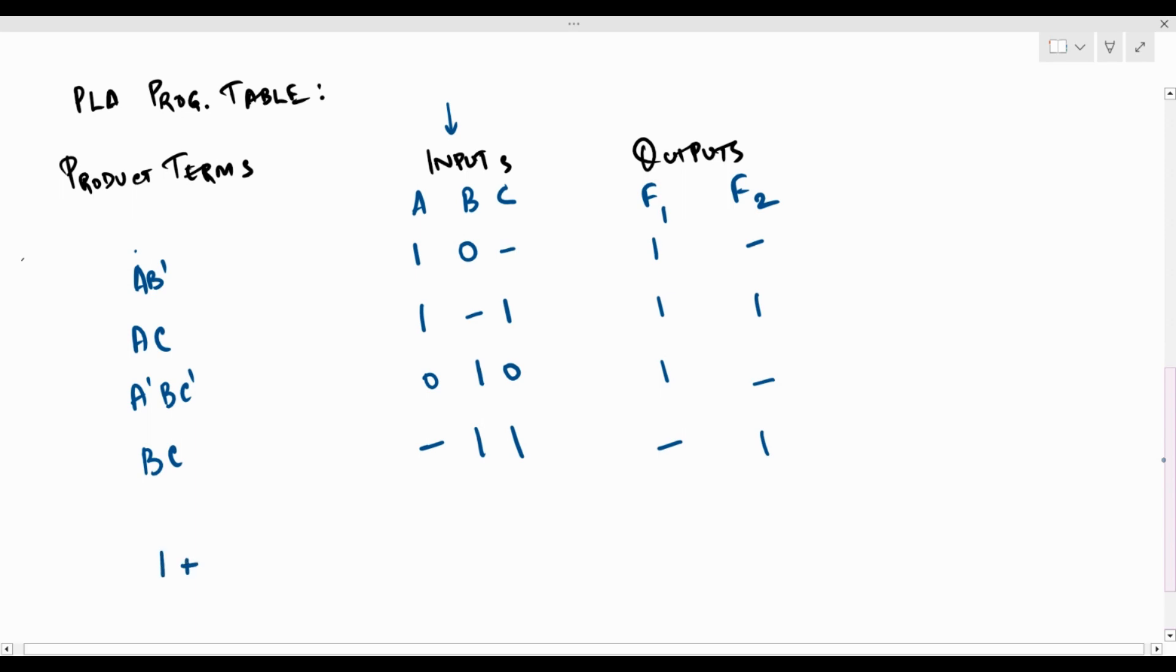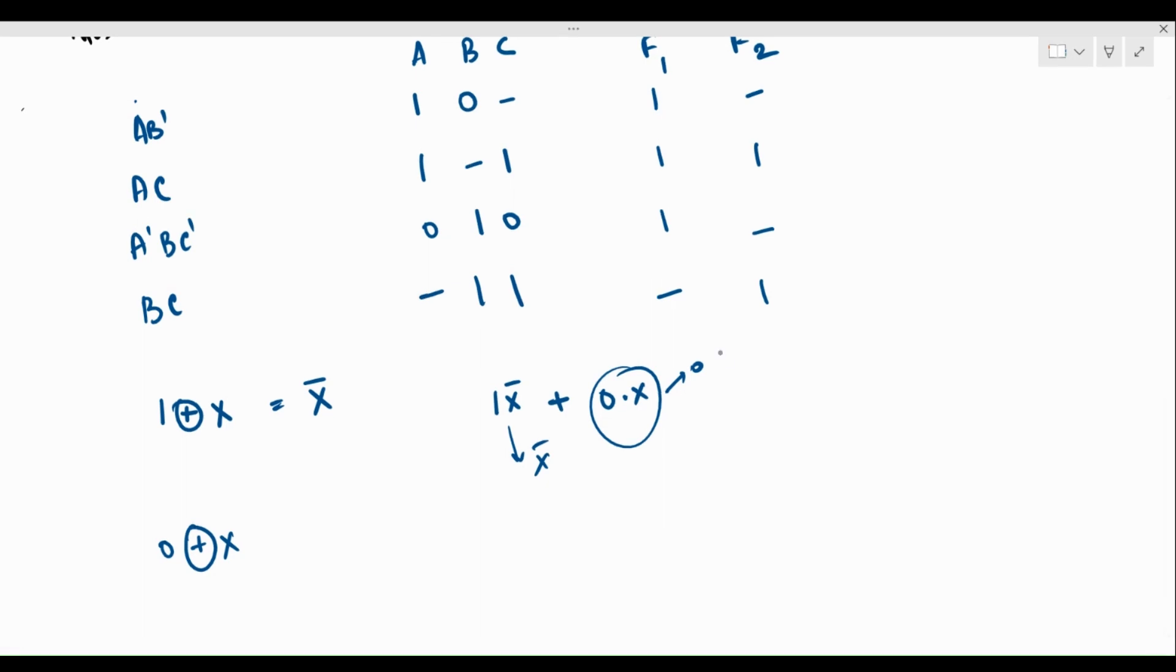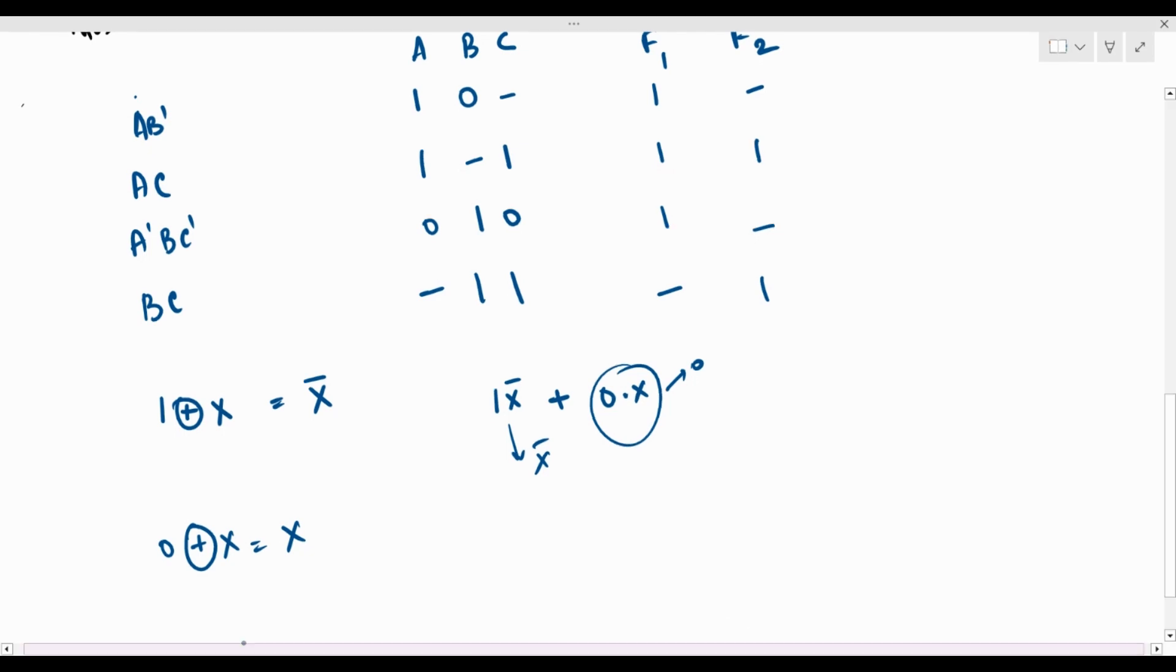But before that, we need to note that one XOR with any variable X is going to be X bar. Why is that? Because if we expand this XOR, what we get is one X bar plus zero X. Zero X is nothing but zero. So what remains here is X bar. Again, we should also remember that zero XOR with any input will be given as X. So we know that zero X bar plus one X. So this term becomes zero and what remains is X.